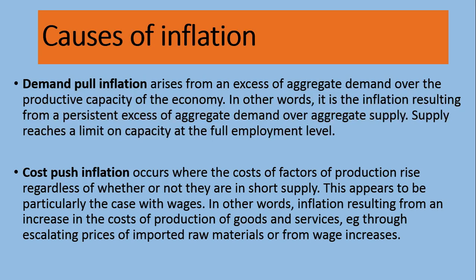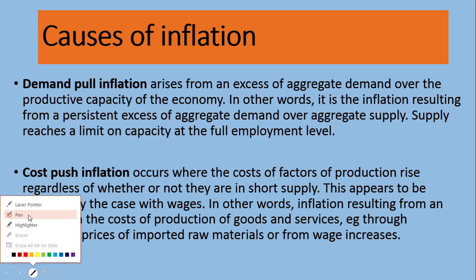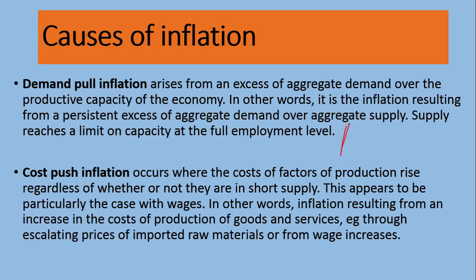Take a simple example: previously the demand for sugar in a country was 50 million tons. Now people might be using more sugar for any reason, but production remains the same, so companies will sell it at a higher price. In other words, this is inflation resulting from the persistent excess of aggregate demand over aggregate supply — when aggregate demand exceeds aggregate supply, prices will rise.